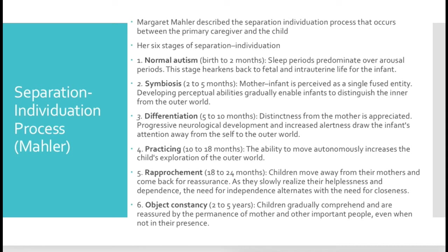The third stage is differentiation, going from five to ten months. At this point, distinctness from the mother is appreciated. There is progressive neurological development and increased alertness, and all of that draws the infant's attention away from the self and onto the outer world.